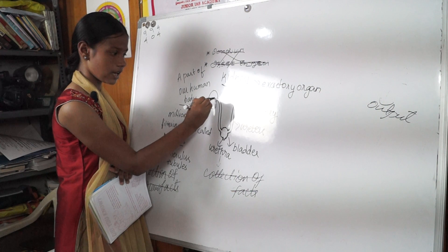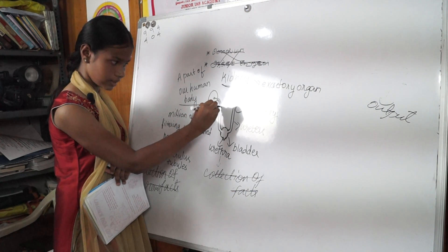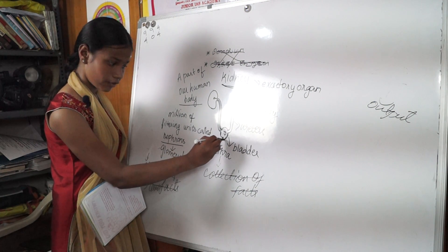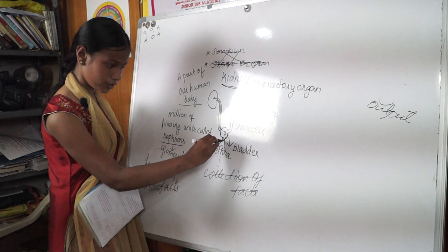From here, from ureters, the urine passes through it and comes to the bladder, and from bladder, from urethra, it removes the urine.